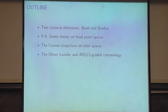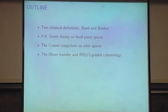The proof of the Conner conjecture is a statement about: if you know something about the homology of a space, then you know something about the homology of its orbit space under an action by a compact Lie group. To prove that, you need something called the Oliver transfer. The Oliver transfer leads you directly into wanting to grade equivariant cohomology groups not on the integers, but on the real representation ring.